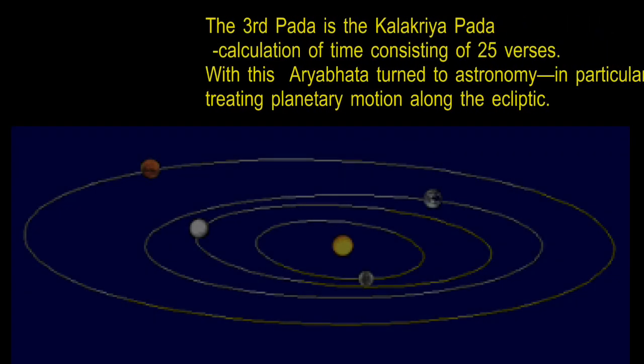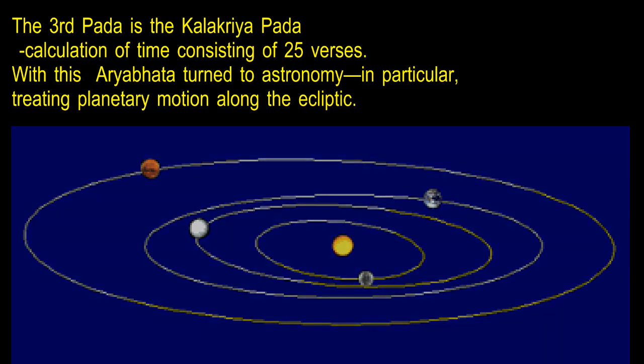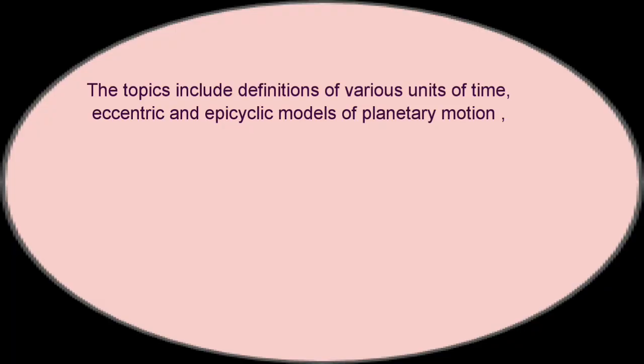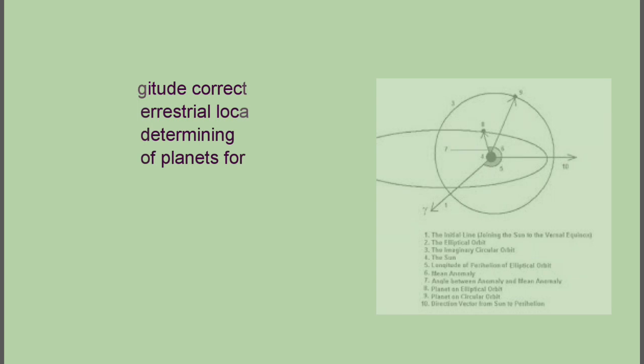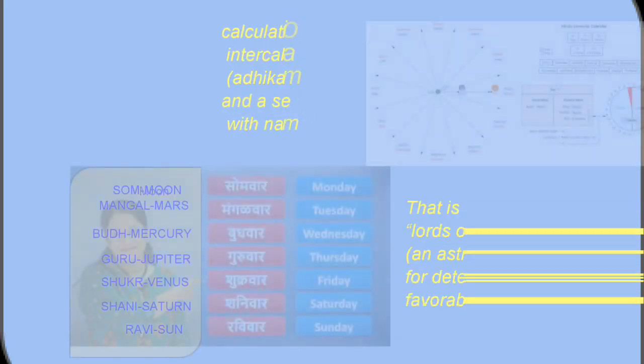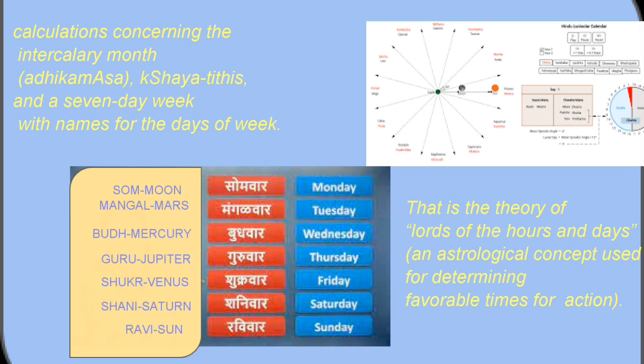The third path is Kalakriya path, calculation of time consisting of 25 verses. With these, are able to turn to astronomy in particular, treating planetary motion along the elliptic. The topics include definitions of various units of time, eccentric and epicyclic models of planetary motion, planetary longitude corrections for different terrestrial locations, a method for determining the position of planets for a given day, calculations concerning the intercalary month, adhik masa, shared duties and a 7-day week with names for the days of week. That is the theory of lots of the hours and days. An astrological concept used for determining favorable times per action.